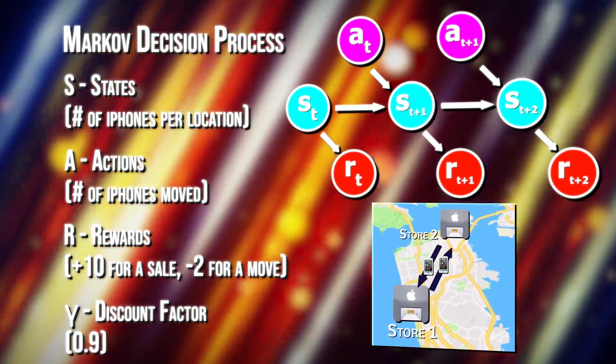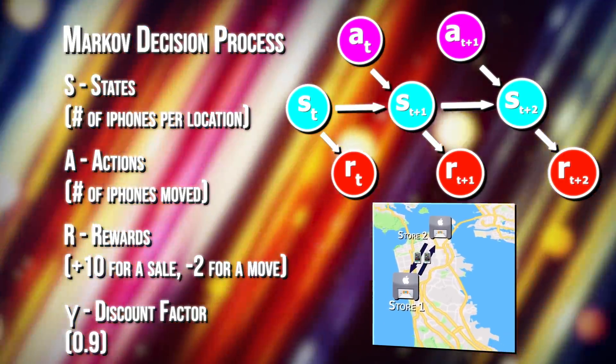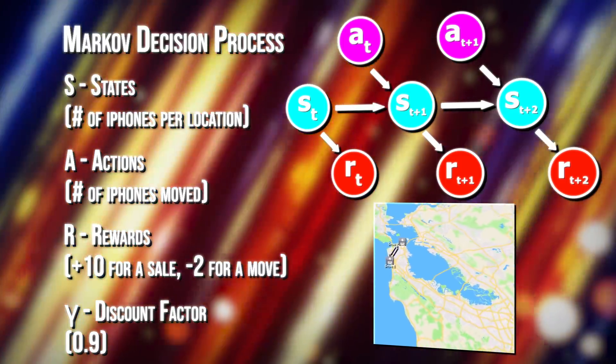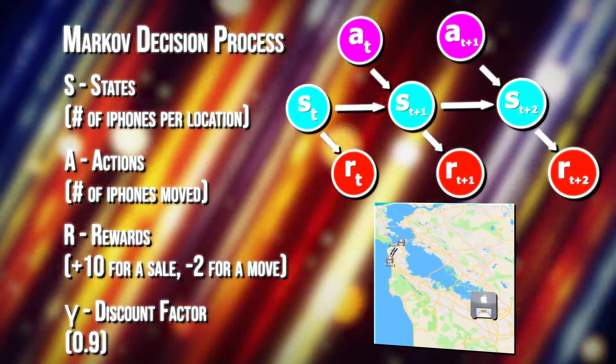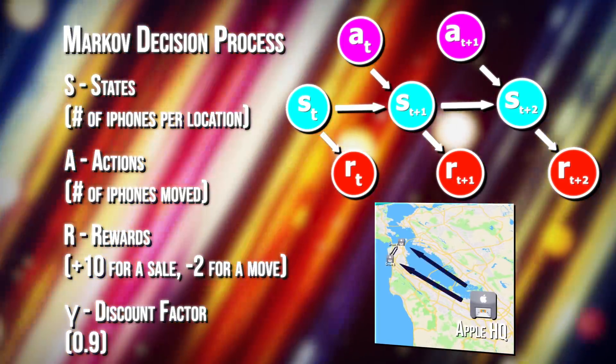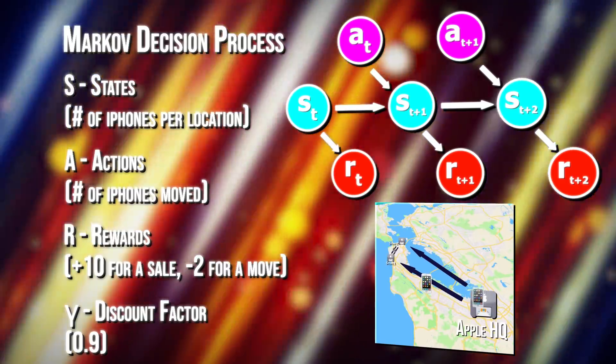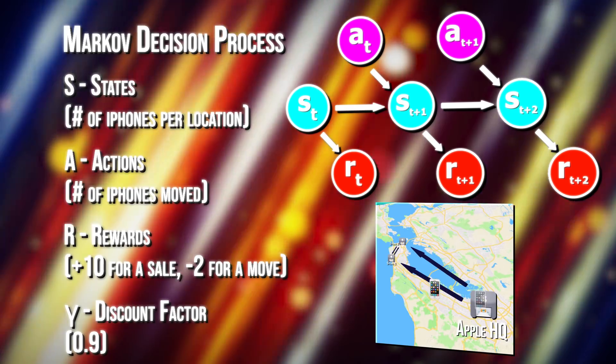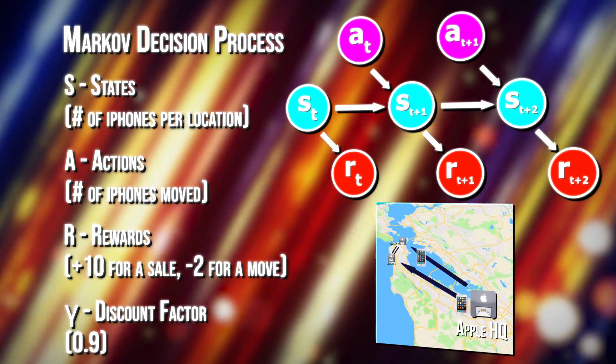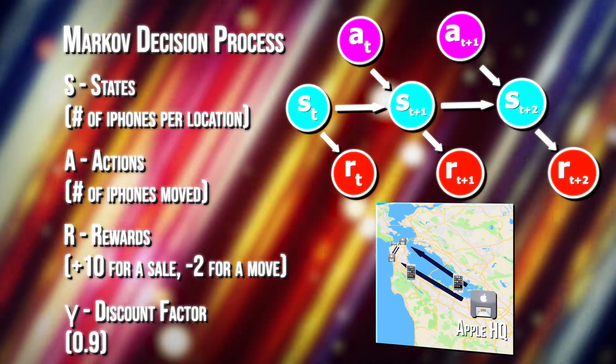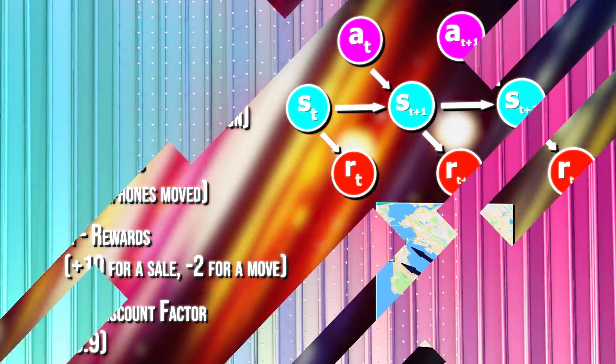And one time step in our case means a full business day. We'll also use a discount factor of 0.9 to prevent us from looking infinitely into the future. We instead look at a certain amount of time into the future. This measures how far ahead in time a reinforcement learning algorithm looks. A discount factor that's closer to 0 indicates that only rewards in the immediate future are being considered, but one that's closer to 1, like ours, prioritizes rewards in the distant future.